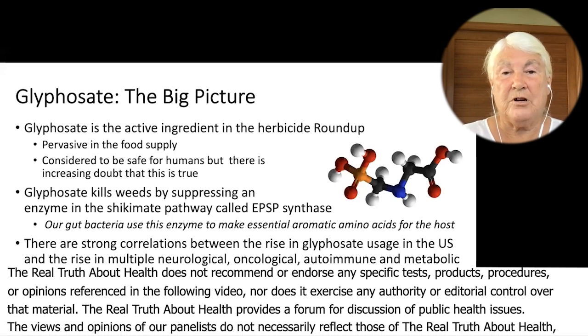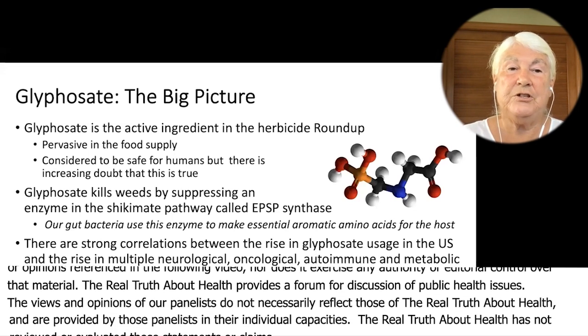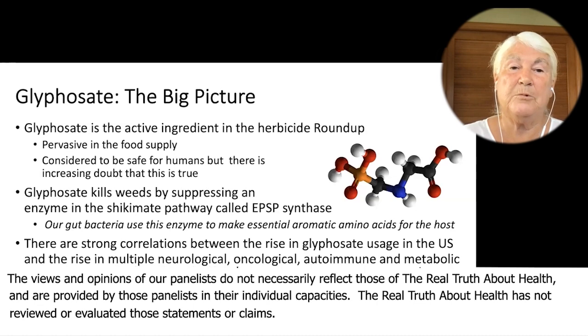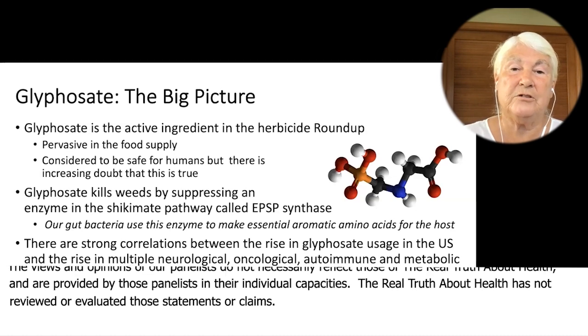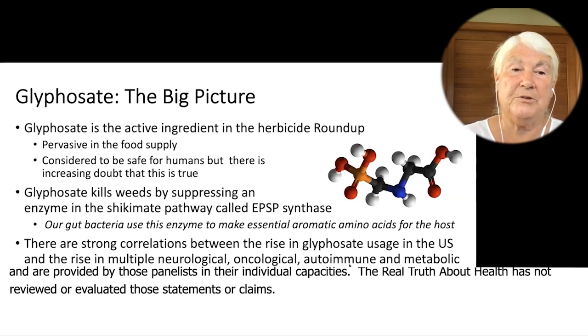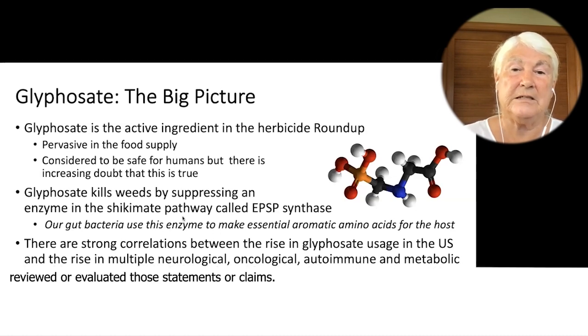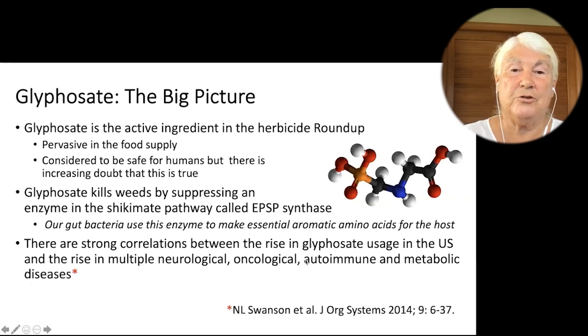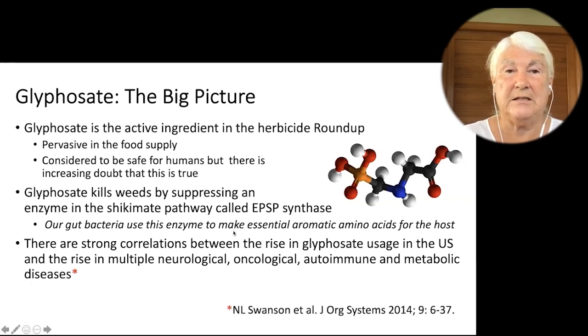There are strong correlations between the rise in glyphosate usage in the United States and the rise in a number of different neurological, oncological, autoimmune, and metabolic diseases. This paper by Nancy Swanson shows all kinds of plots of correlations between glyphosate and these diseases.